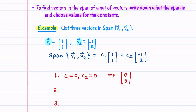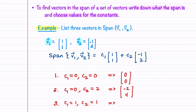Another vector can be found by setting c1 equal to 0 and c2 equal to 2, which gives the vector (-2, 4). Let's now do one where c1 and c2 are both non-zero. We can choose c1 to be 1 and c2 to be 1, and then we add the two vectors to get (0, 3). There are an infinite number of vectors we could list that are in this span because c1 and c2 can be any value between minus infinity and infinity.